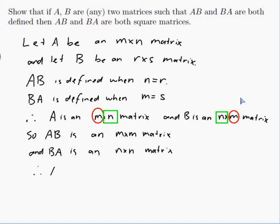Therefore AB and BA are both square, because they're the same distance across the side as they are across the top. That's the definition of a square matrix.